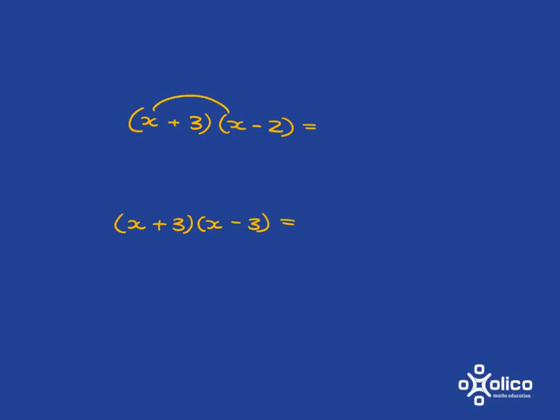So if we have a look here, how do we do this? Make sure we multiply everything in the first bracket with everything in the second bracket. x times x is x squared. Then x times minus 2, which is minus 2x. Then 3 times x. And then 3 times minus 2, which is minus 6. These two are like terms, so I'm going to have x squared plus x minus 6.